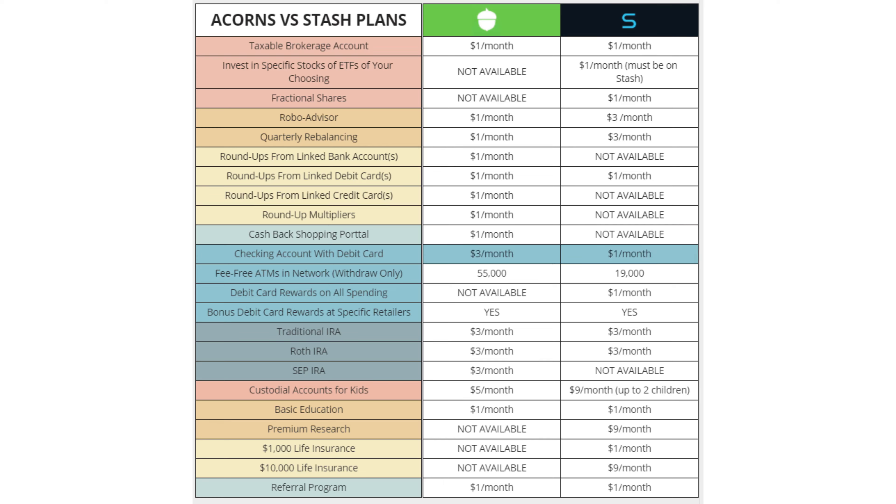In terms of banking and checking accounts, a checking account comes with Stash's $1 a month plan, while with Acorns you'd have to upgrade to the $3 a month plan. Keep in mind that neither Stash nor Acorns is a bank — Acorns has partnered with Lincoln Savings Bank, and Stash has partnered with Green Dot Bank to offer these banking features. These are basic checking accounts: you can receive direct deposit, they come with a debit card, and you can use ATMs to withdraw cash. However, you cannot make deposits at these ATMs — no cash or check deposits at the ATM — though you can deposit checks via mobile deposit.